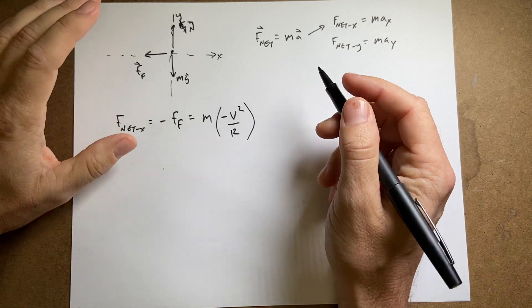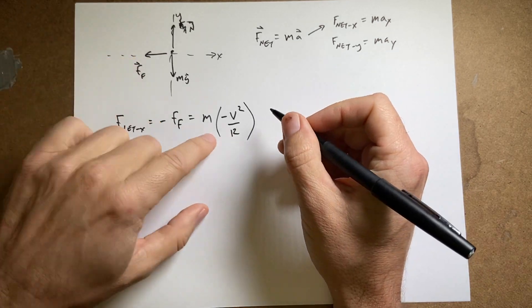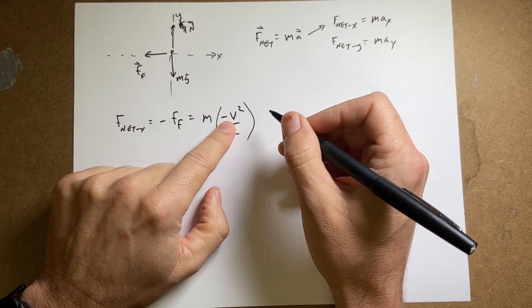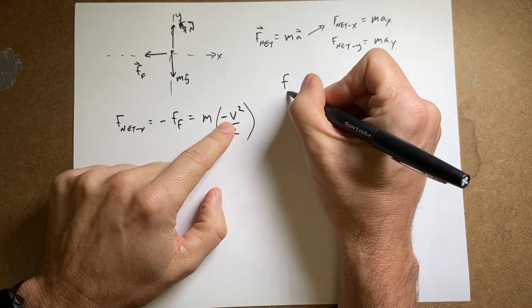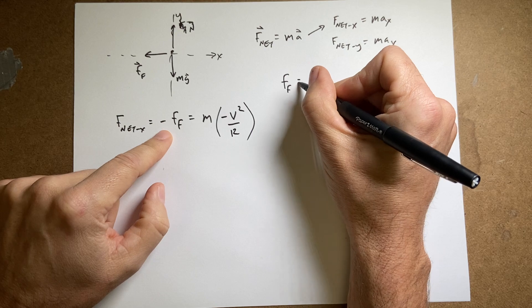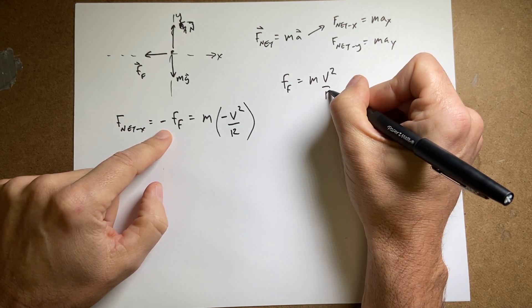But we're dealing with centrifugal. Okay, now let's just write this out as f friction, the negative signs cancel equals mass times v squared over r.